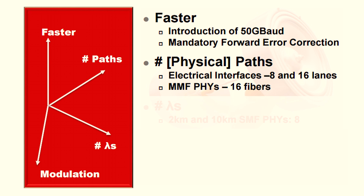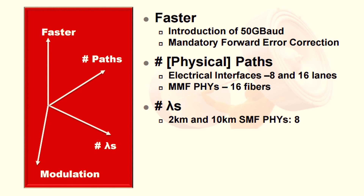In the case of single-mode fiber, you can also add optical lambdas. Prior generations of Ethernet have used four-lambda approaches, but in the case of achieving 400 gig on a WDM-type system, we find ourselves using eight lambdas at 50 gig PAM4 to achieve that aggregate of 400 gig.